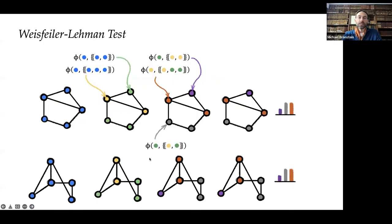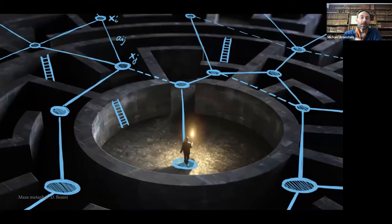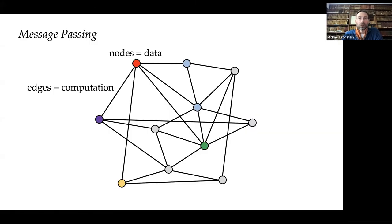If two graphs have different WL color descriptors, they are certainly not isomorphic, but if the descriptors are the same, you cannot be sure — it's a necessary but insufficient condition. The metaphor, borrowed from Dominic Beani, is like discovering the structure of a maze by walking in it: certain structures cannot be detected this way. Message passing treats nodes and edges differently — data resides in nodes while edges are used for computation, serving dual roles as input and computational device.